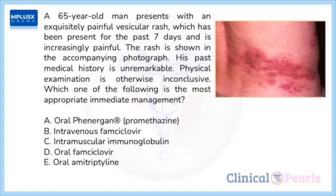Next question: a 65-year-old man presents with an exquisitely painful vesicular rash which has been present for the past seven days and is increasingly painful. The rash is shown in the accompanying photograph. His past medical history is unremarkable and physical examination is otherwise inconclusive. Which one of the following is the most appropriate immediate management? A) oral Phenergan (promethazine), B) intravenous famciclovir, C) intramuscular immunoglobulin, D) oral famciclovir, E) oral amitriptyline.